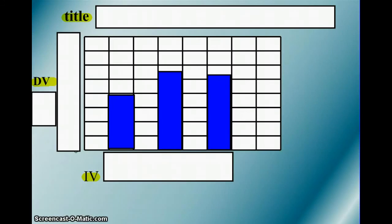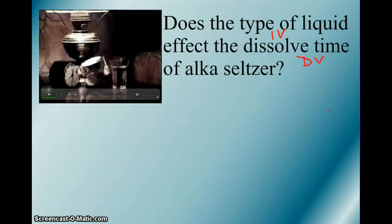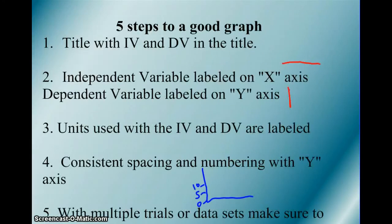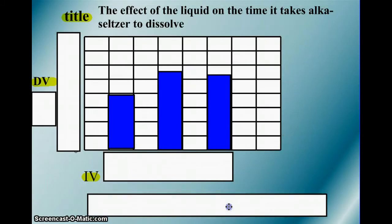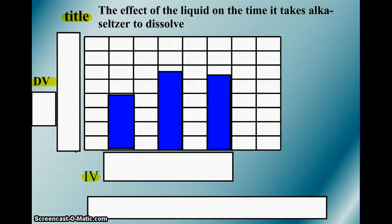If we were graphing the Alka-Seltzer experiment, does the type of liquid affect the dissolved time of Alka-Seltzer? We need a good title with independent and dependent variables in there. Here's our title. The effect of the liquid, here's our independent variable, on the time it takes Alka-Seltzer to dissolve, there's our dependent variable. Having an understanding of independent and dependent variables is vital to making a graph here.